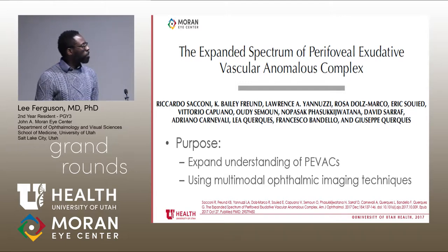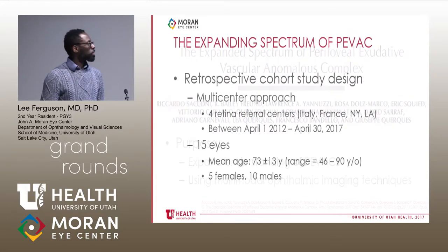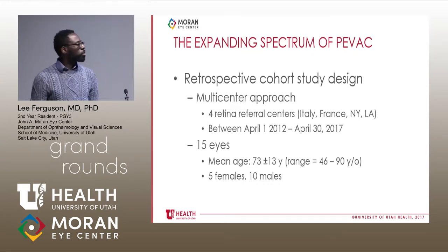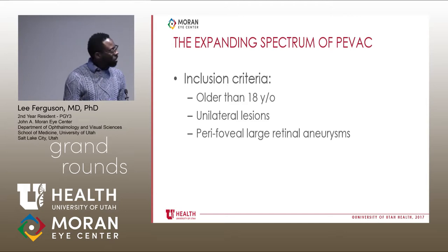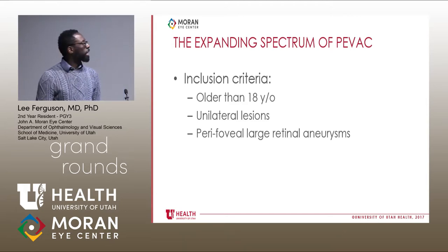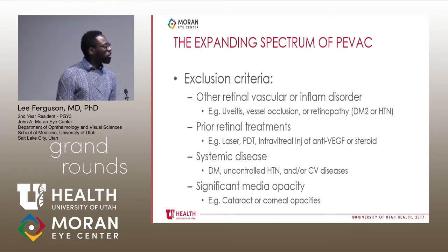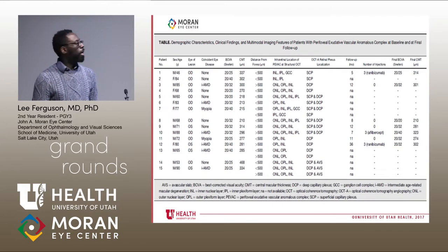A later paper came out expanding the spectrum of PVAC and trying to identify the multimodal ophthalmic imaging features associated with this disease to help classify it. This was a retrospective cohort multicenter study that isolated 15 eyes with a mean age of 73, ranging from 46 to 90 years of age. Their inclusion criteria looked at individuals older than 18 with a unilateral lesion associated with a perifoveal large retinal aneurysm, excluding other retinal or systemic issues that could confound findings.